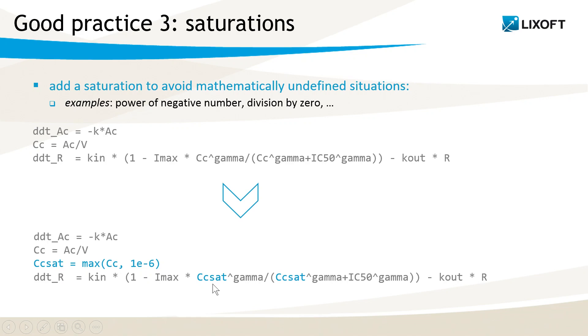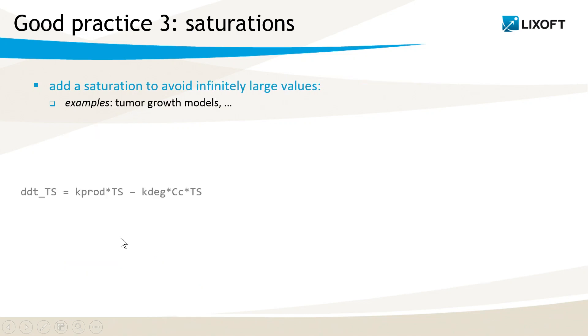The same reasoning is also true if to divide by something that may become close to zero. A saturation is also important when the variables can become infinitely large. With the tumor growth model with exponential growth, for instance, the tumor size can quickly become so large that it will be considered by the computer as infinity, and lead to a failure of the ODE solver. It may not necessarily happen during the estimation part, but often during the simulation for the VPCs, for instance. So in this case, we can introduce an upper boundary, as I have done here, for instance using an IF statement.